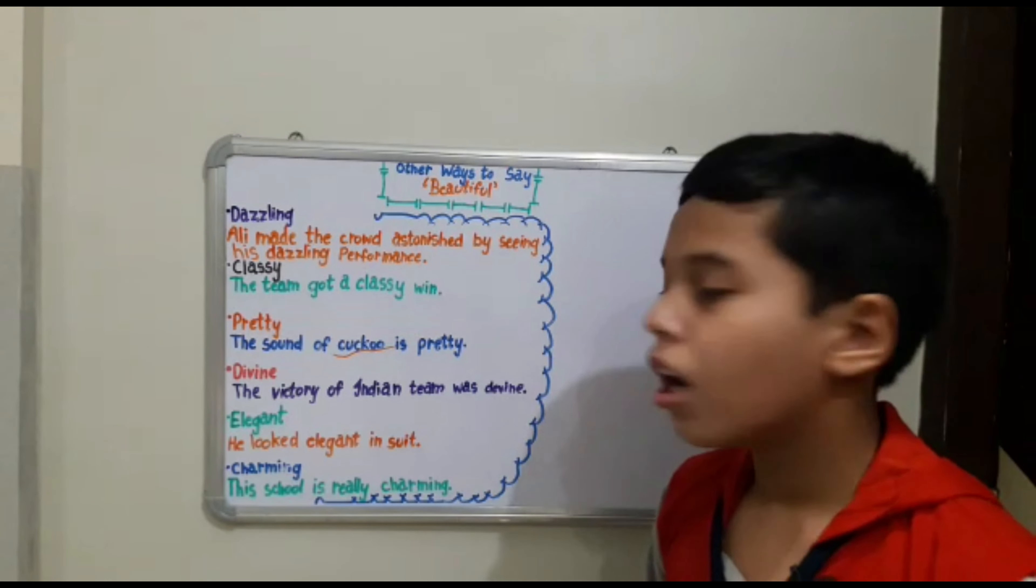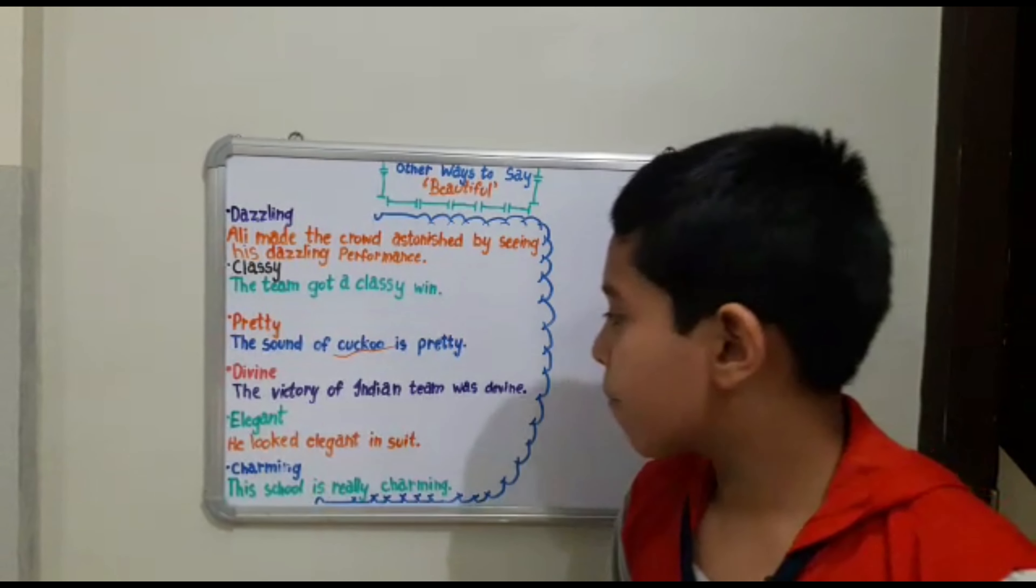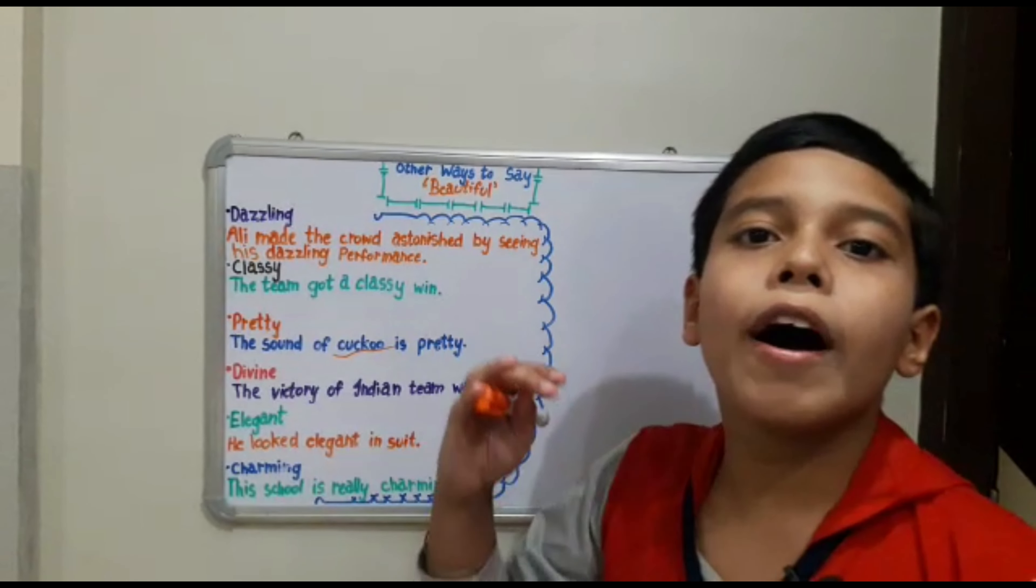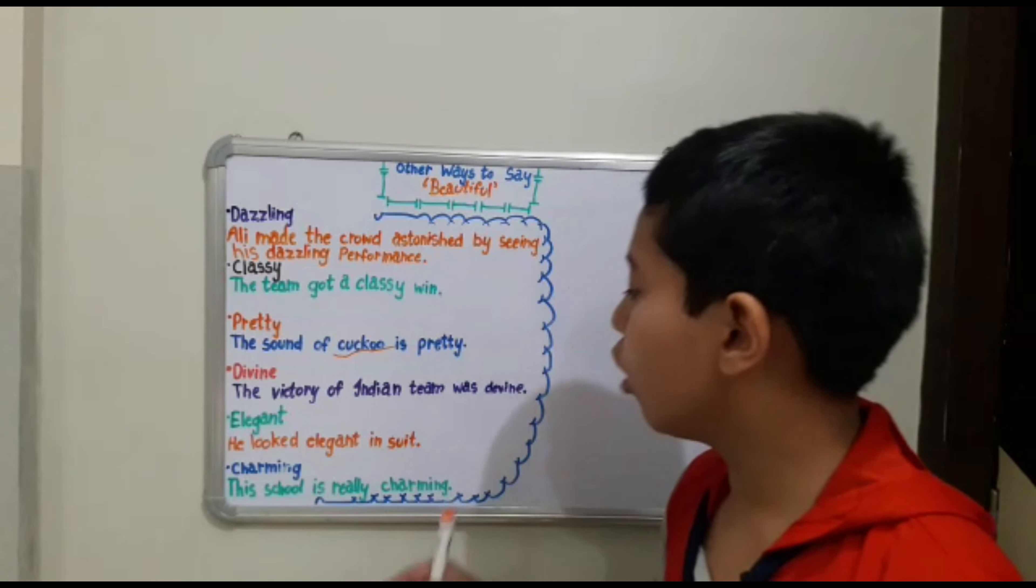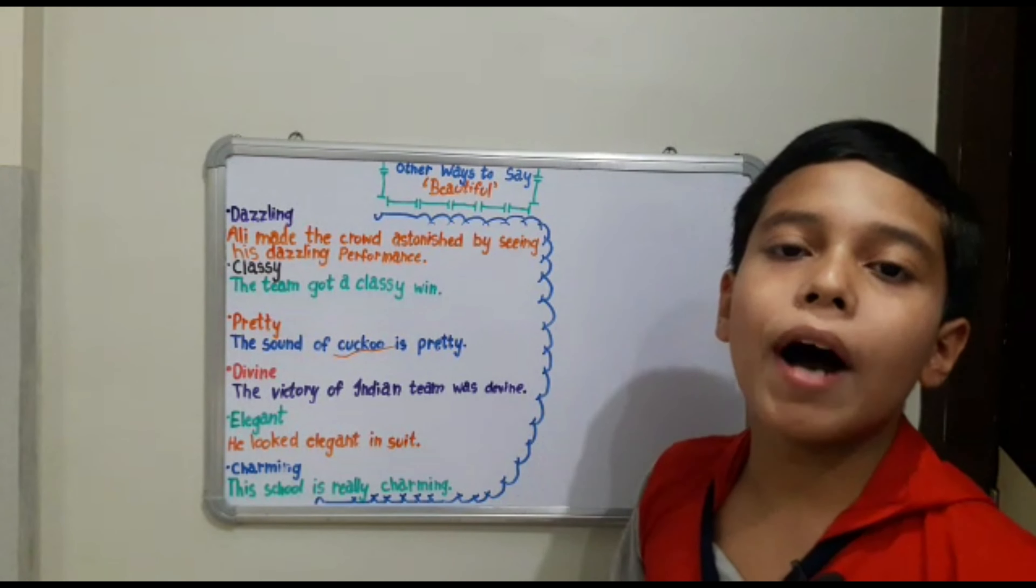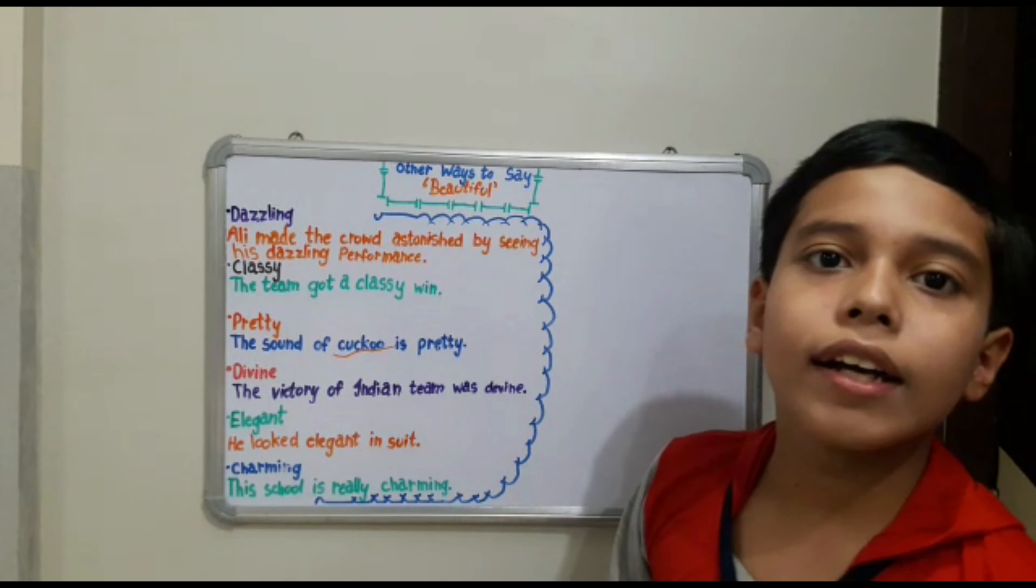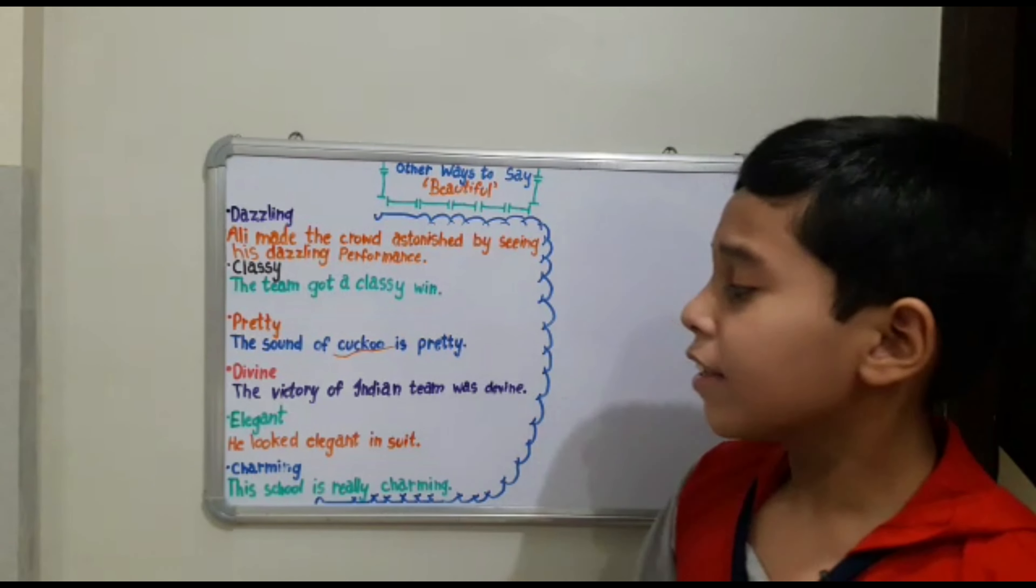Our next word is charming. This means this school is really charming. This means if someone has seen the school outside and said this school is very beautiful, then we say this school is really charming.